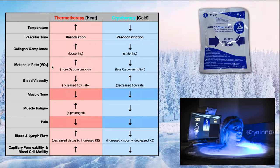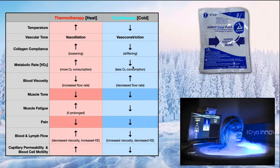In terms of metabolic rates — so consumption of oxygen or VO2 — cryotherapy overall slows down metabolism. You get a decrease in metabolic rate in the area where you're applying the ice pack. Again, if you put it on the lower back, you're not going to get these effects in the legs or the arm — just in the place where you put the modality. By decreasing metabolic rate, we get less oxygen consumption in that area.